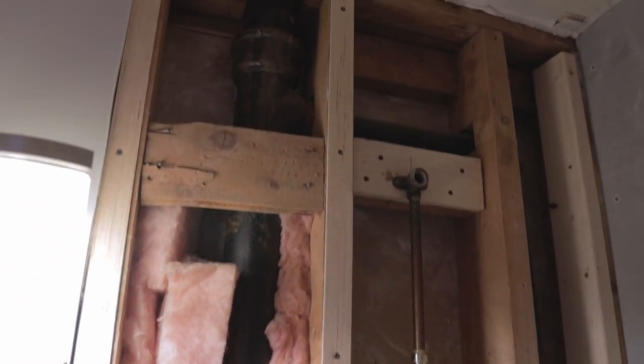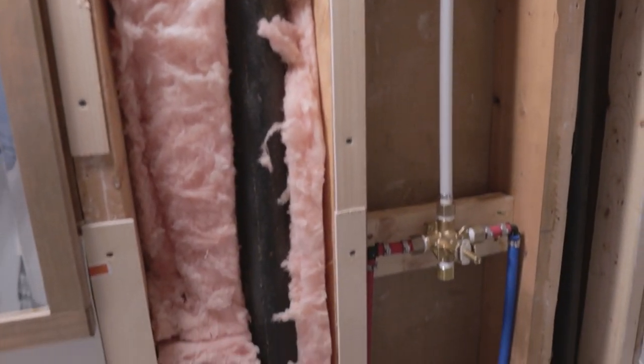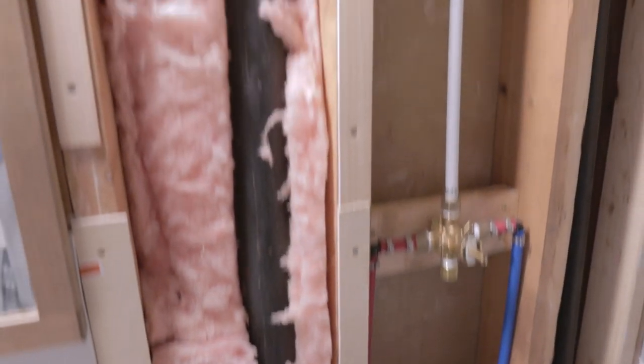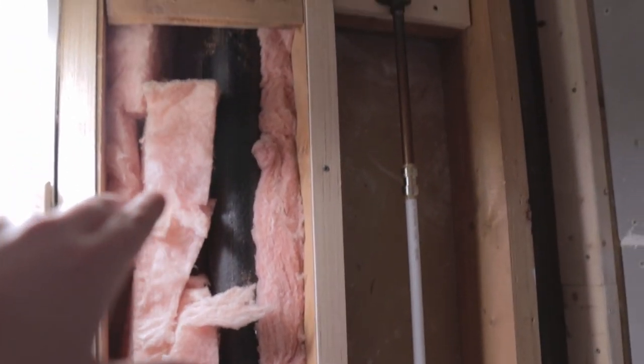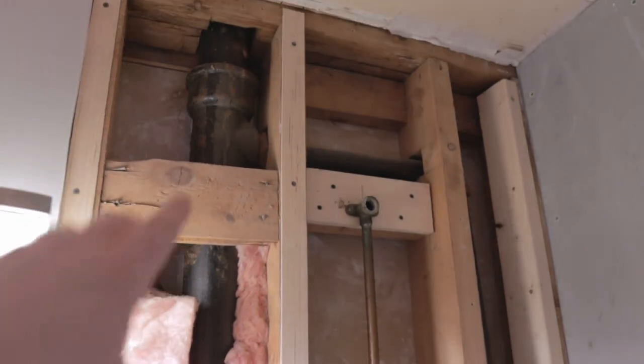One thing to note, there's this cast iron pipe in here. I'm not going to replace this at this time, but it's important to note it because if the kitchen ever gets done, that wall is on the other side here. The kitchen's on the other side of this wall, so when that kitchen is done, that'd be the optimum time to get this replaced.